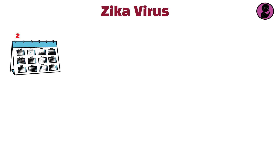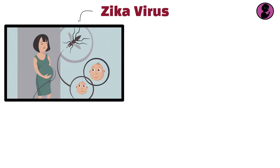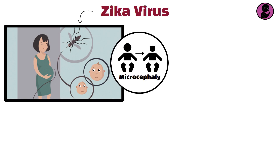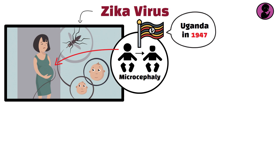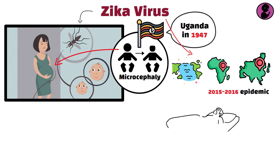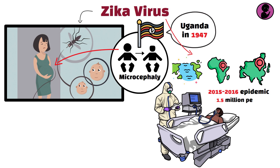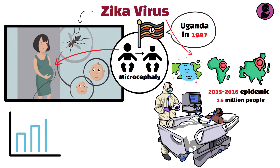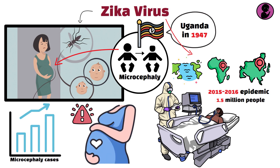Zika virus, 2015 to 2016. The Zika virus is a mosquito-borne flavivirus that can cause severe birth defects, such as microcephaly, in infected pregnant women. First identified in Uganda in 1947, Zika outbreaks have occurred in Africa, Southeast Asia, and the Pacific Islands. The 2015 to 2016 epidemic in the Americas infected over 1.5 million people, leading to a surge in microcephaly cases and prompting travel warnings for pregnant women.